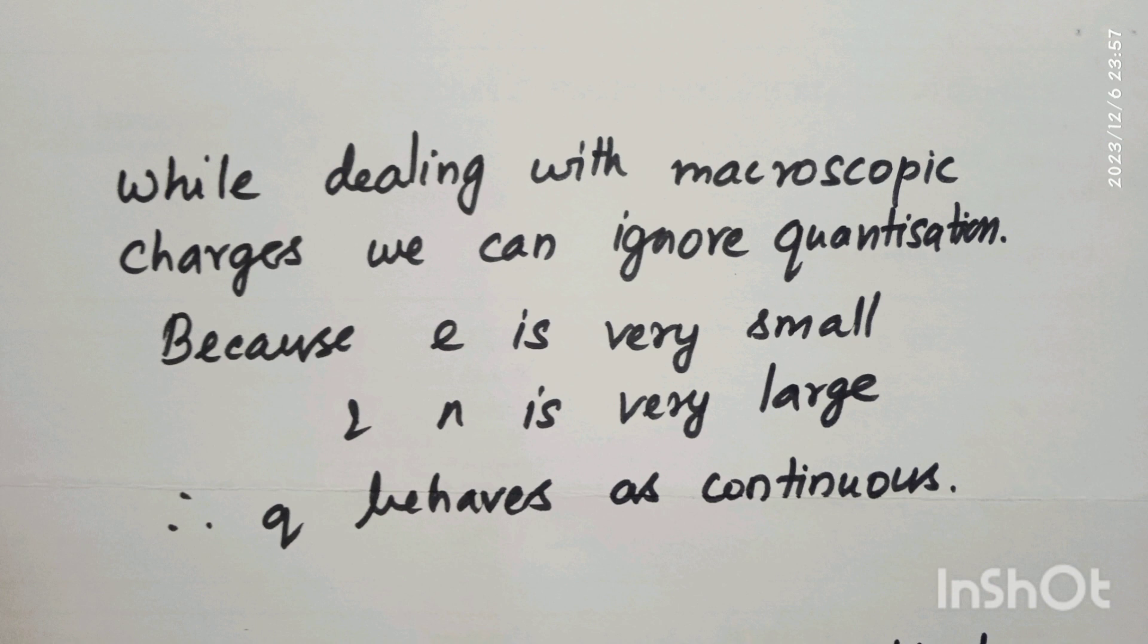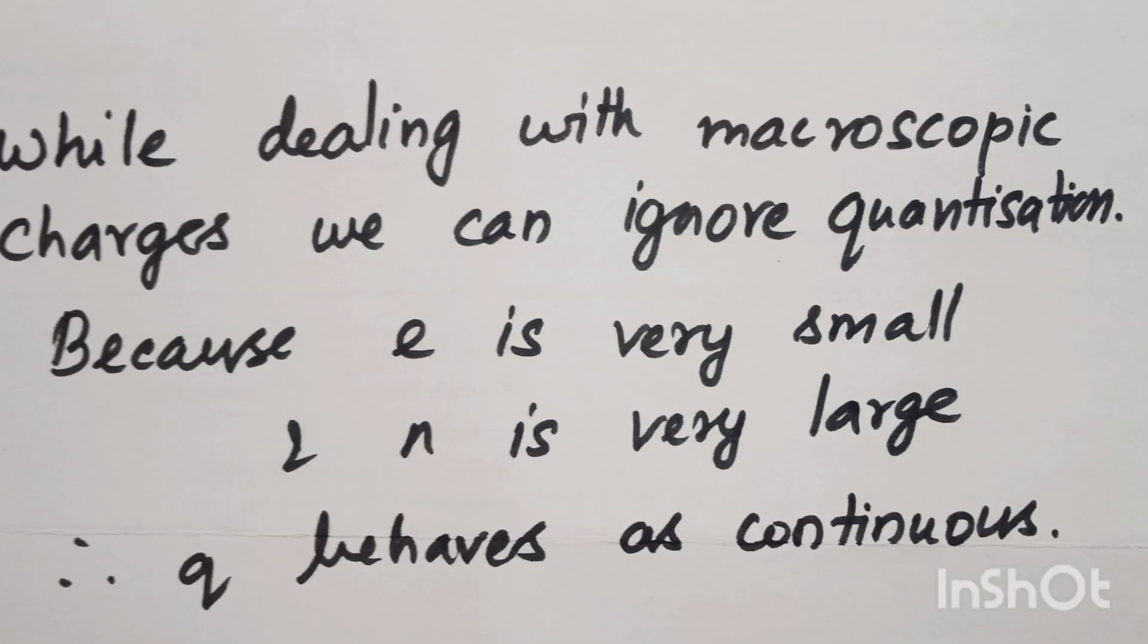As we keep adding electrons, the charge behaves as continuous. While dealing with macroscopic charges, we can ignore quantization because e is very small and n is very large. Therefore, q behaves as continuous.